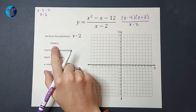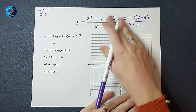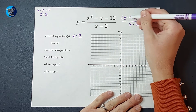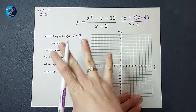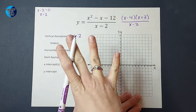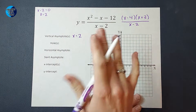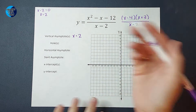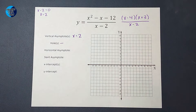Holes are formed on your graph if, when you factor, a factor cancels between numerator and denominator. For example, if the numerator had also factored to include x minus 2, those would cancel each other out — that is where a hole is formed. This example does not have that. I'll link a video in the corner with an example where the graph has a hole, but for this one we don't have any holes.